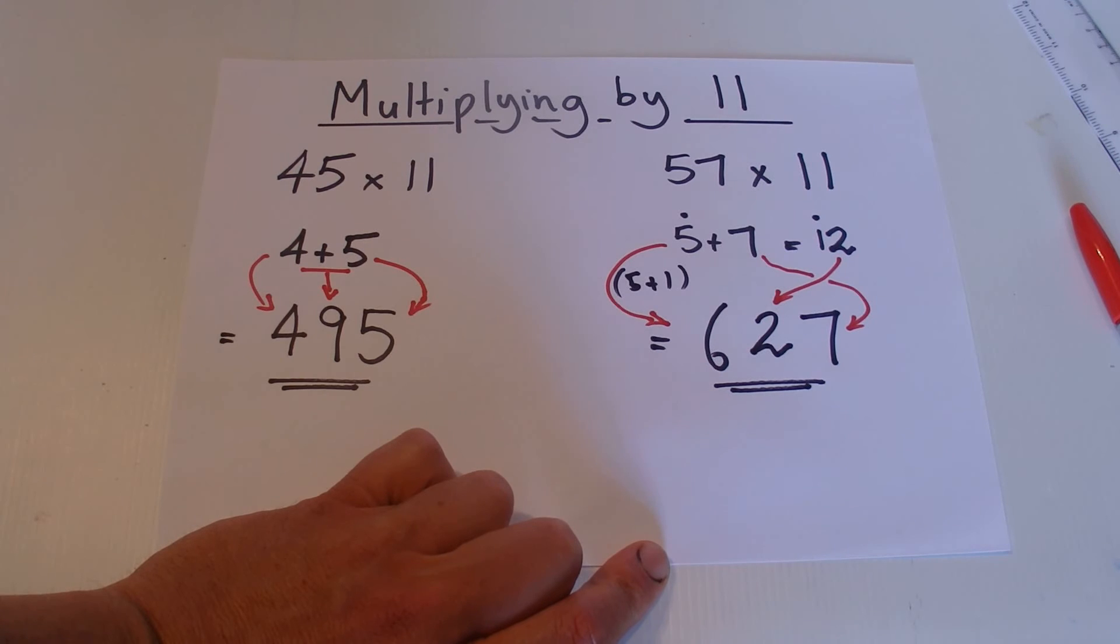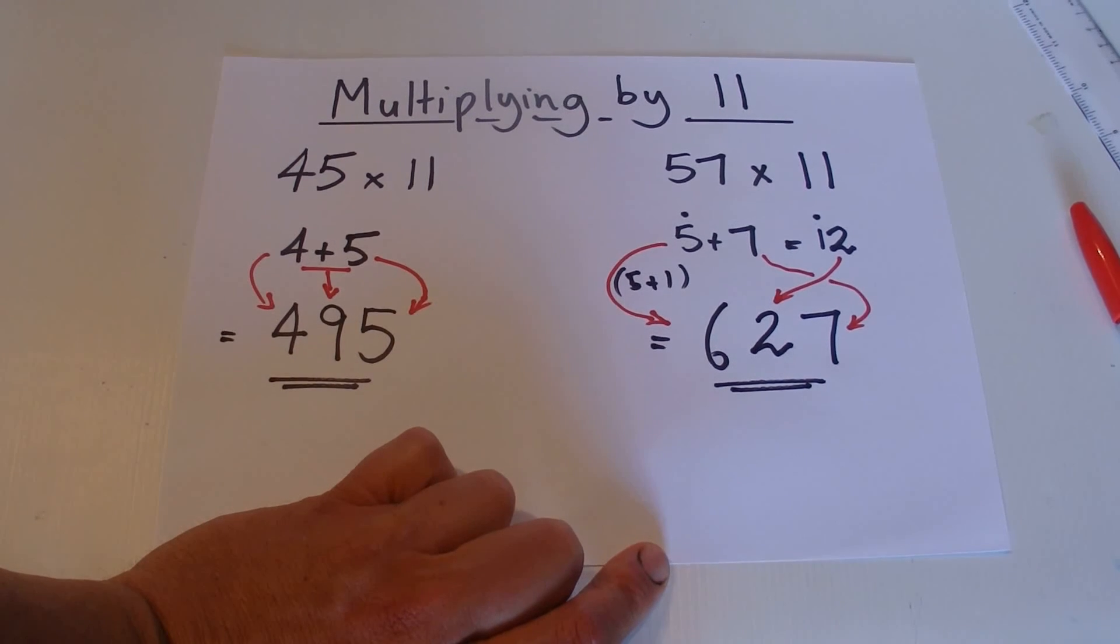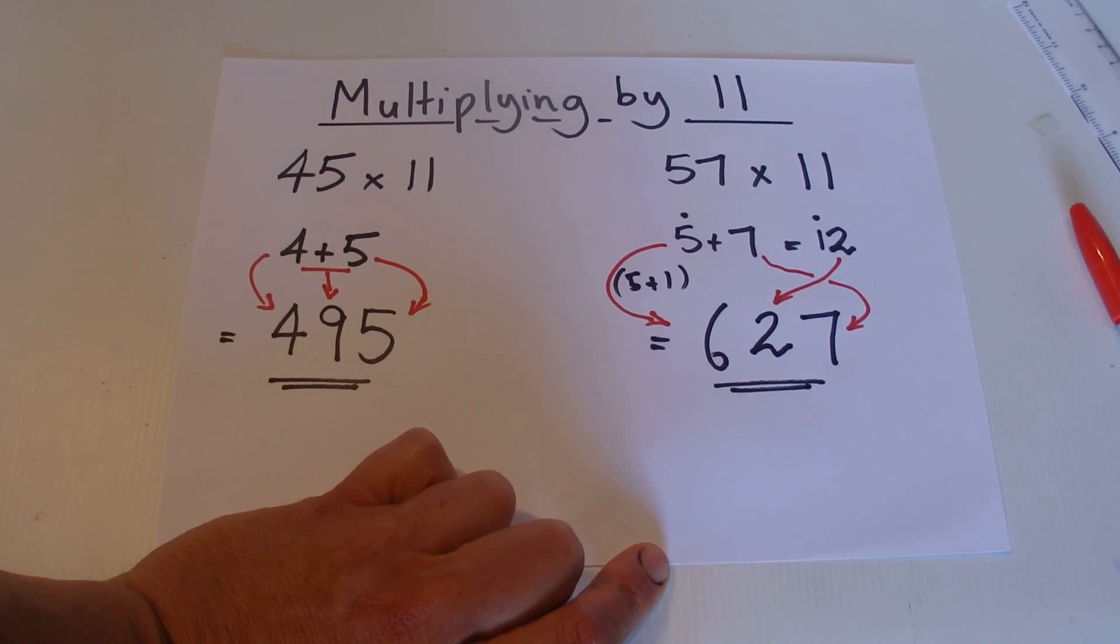So there we go, that's a simple method, a simple trick, where you can multiply by 11 and come up with the answer very quickly without the need of a calculator. Okay, thanks for watching, hope you've enjoyed the video, bye for now.